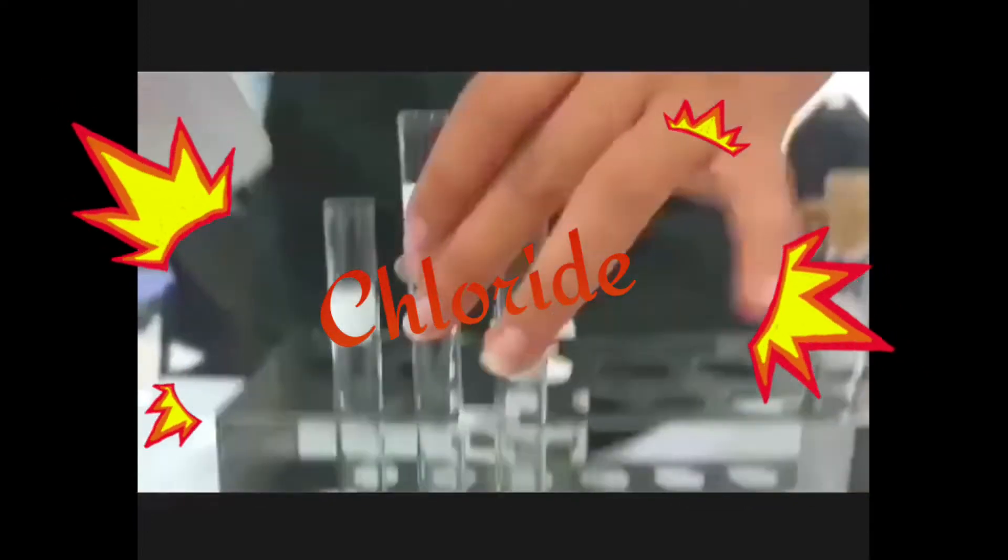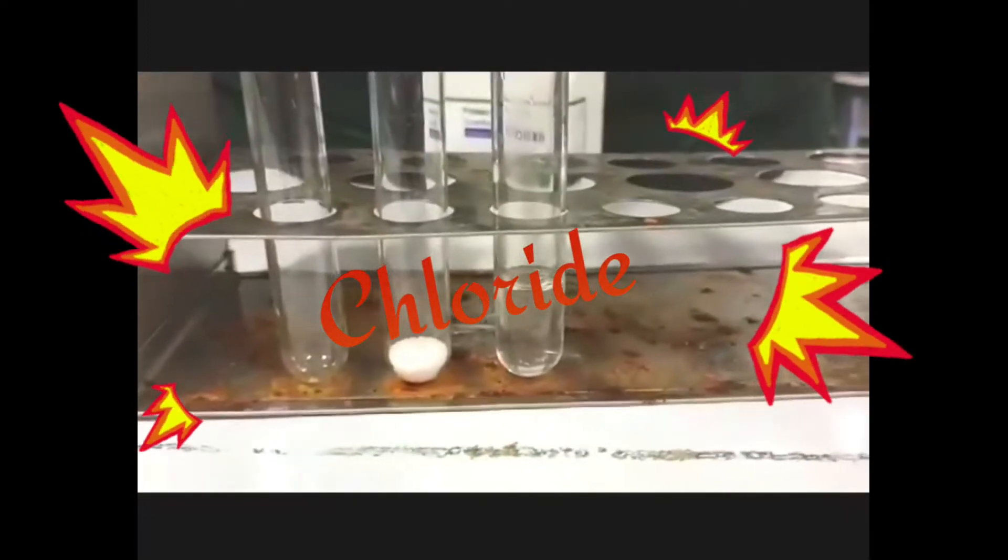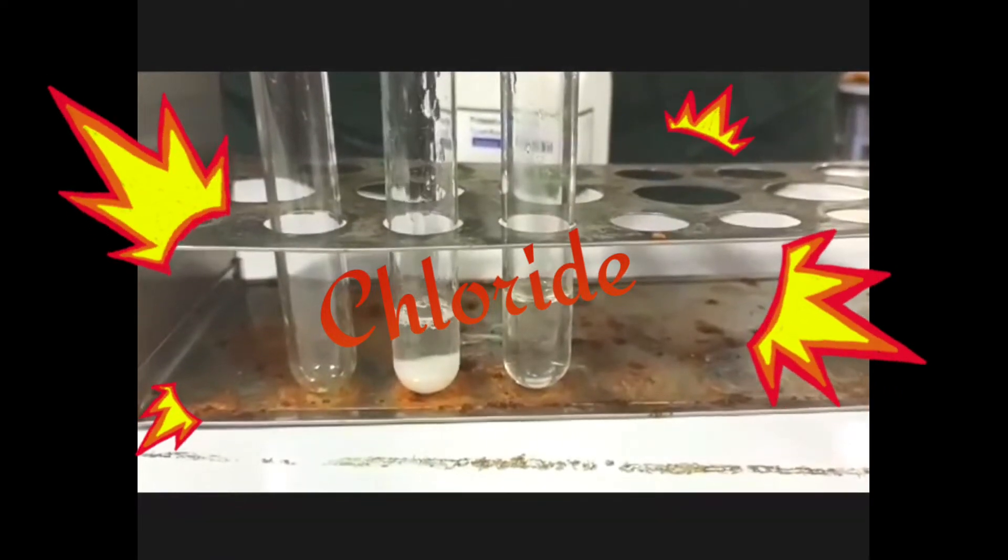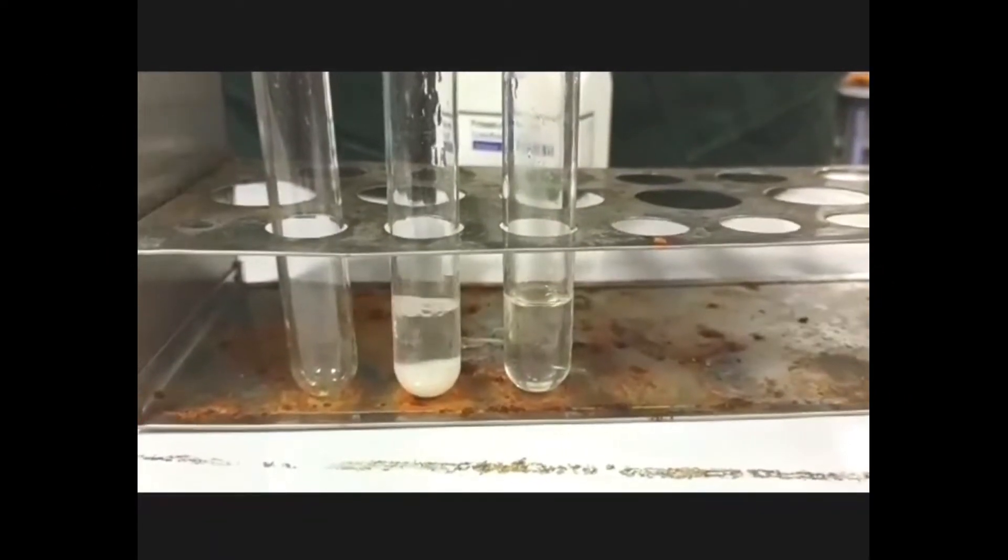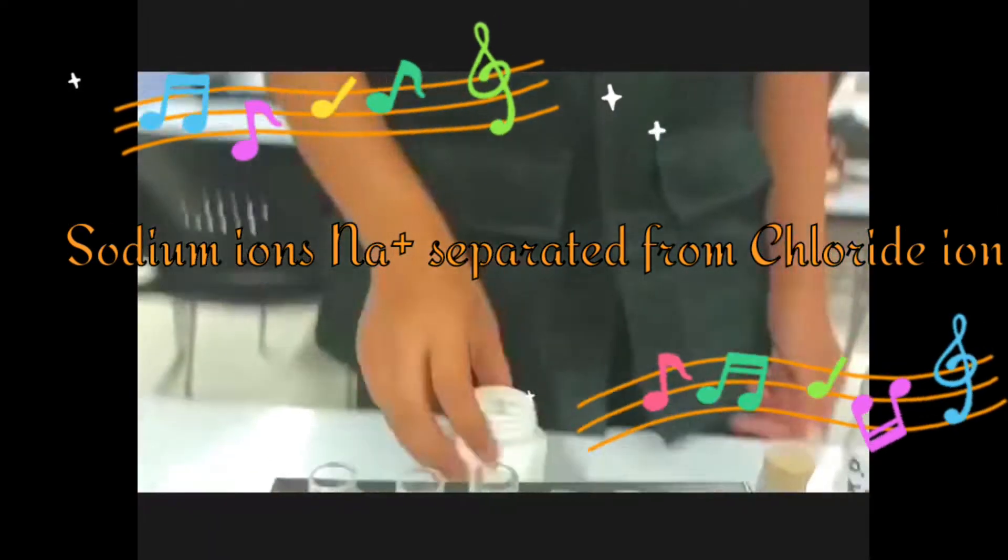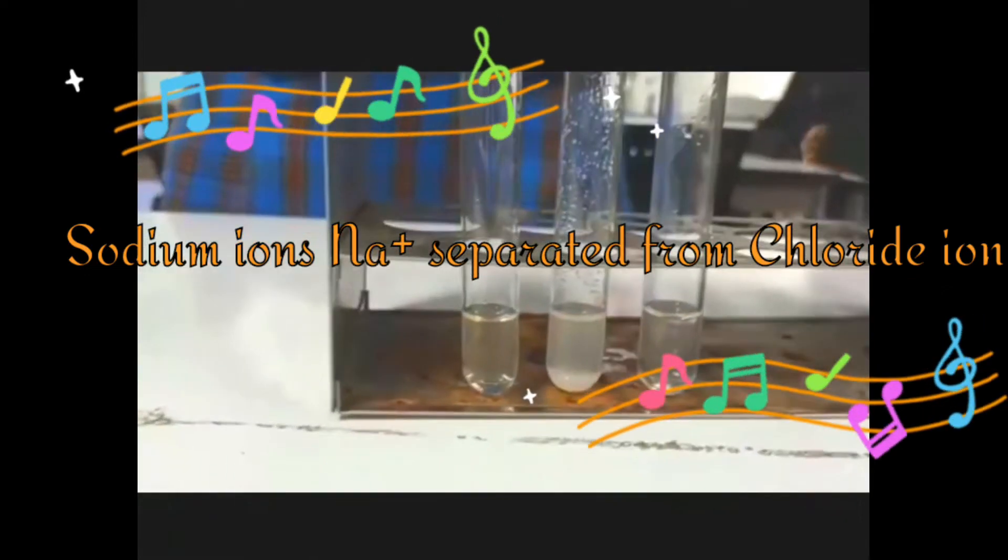We add a bit of water so we can make a solution. As we do so, the white powder dissolves. You might need to shake it a bit. As you can see, it has separated the positive sodium ion from the chloride ion so they can move around freely.